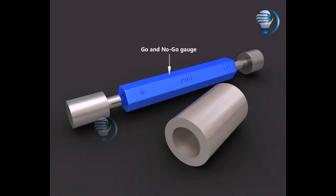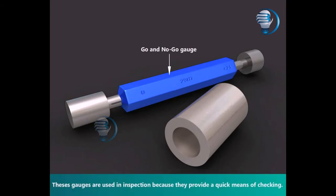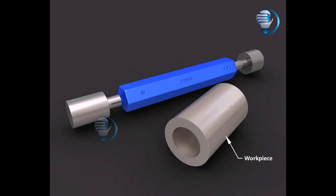Go and no-go gauge. These gauges are used in inspection because they provide a quick means of checking workpieces.